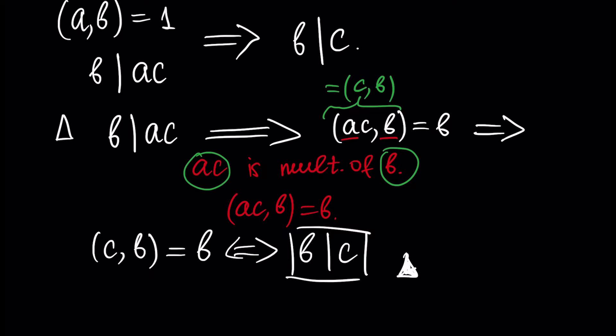Let's formulate our result again. If we have two numbers A and B that are co-prime, and B divides AC, then since B and A are co-prime, B has to divide C.